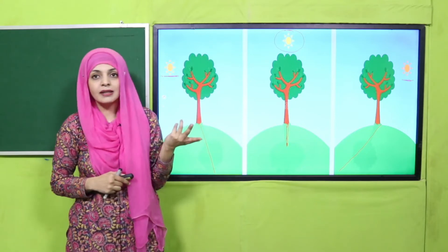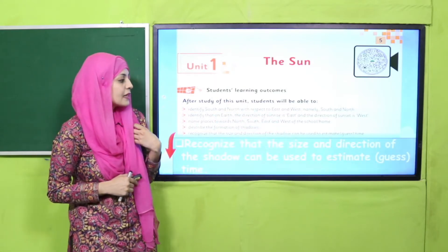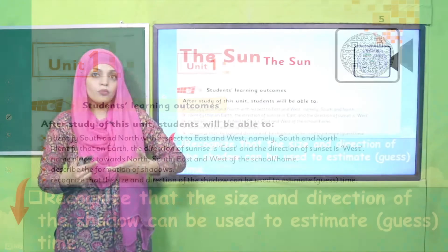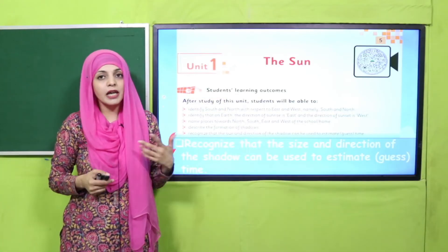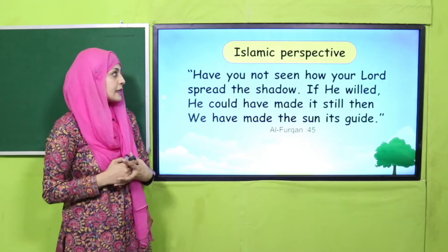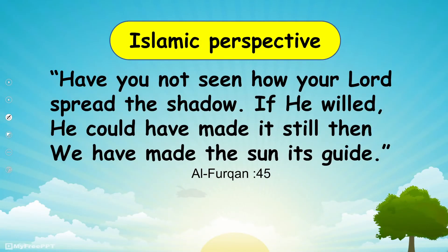Let's have a look at the student learning outcome for today, given on page number five: recognize that the size and direction of the shadow can be used to estimate the time. From the direction and size of the shadow you can easily tell the time. From an Islamic perspective: 'Have you not seen how your Lord spread the shadow? With the help of the sun, the shadows that are formed are constantly moving and they help you to tell the time.'